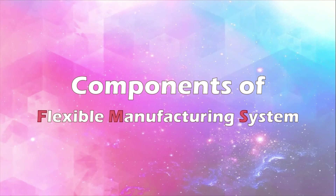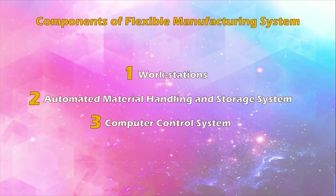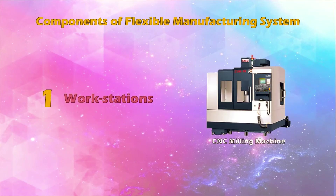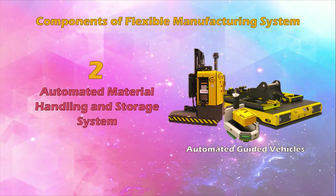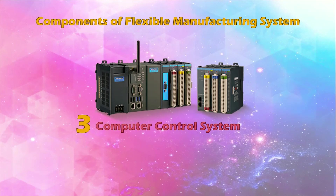Components of a flexible manufacturing system. There are three main components: one, workstations — they are typically CNC machine tools that perform machining operations on parts; two, automated material handling and storage systems — they are used to transport work parts and sub-assembly parts between the processing stations, sometimes incorporating storage into their function; three, a computer control system — it is used to coordinate the activities of the processing stations and the material handling system in the FMS.